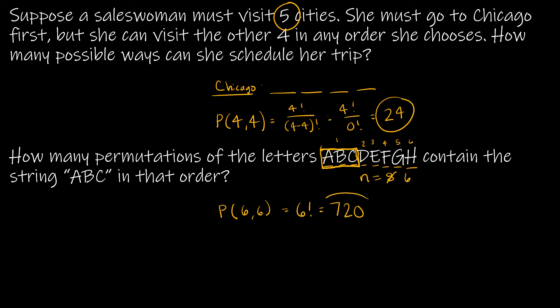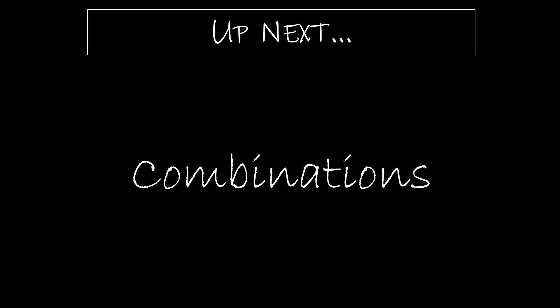That concludes permutations for now. We will revisit them in section 6.5, where things get more complicated — for example, cases where letters or values can be repeated. Next, we'll move on to combinations, which are similar to permutations except that in combinations, order does not matter — we're talking about groups rather than linear arrangements.